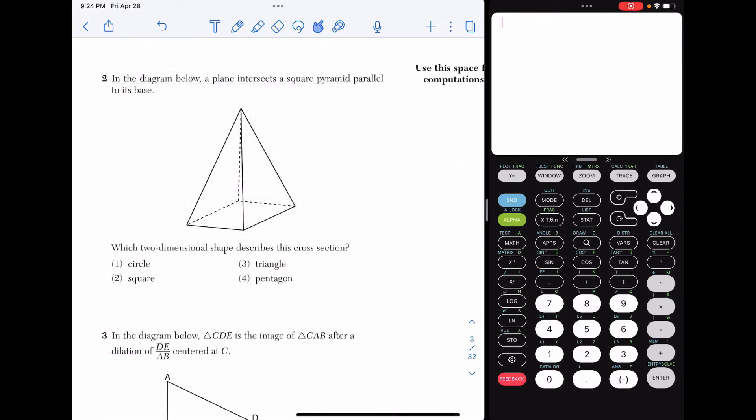Alright, number 2. In the diagram below, a plane intersects a square pyramid parallel to its base. What two-dimensional shape describes this cross-section? Anytime you are finding a cross-section and it is parallel to the base, it's basically going to be the same shape as the base. So in this picture, in this 3D shape here, we have a square pyramid. The base is a square, so our cross-section is a square, choice 2.